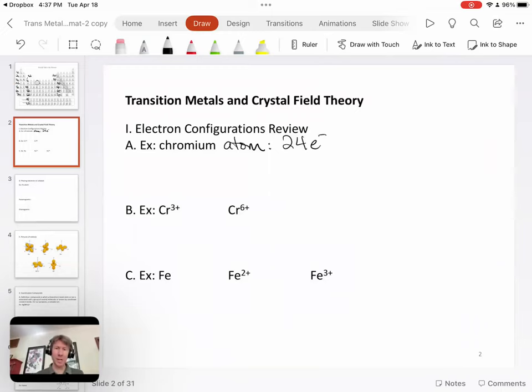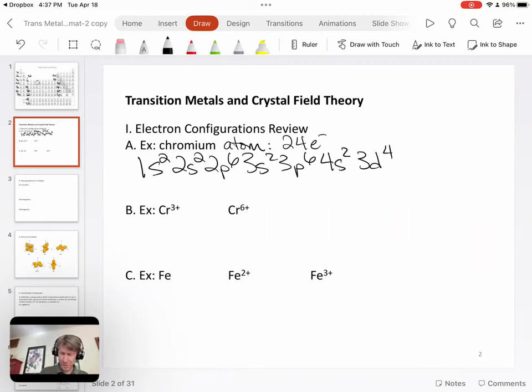Now we have 24 electrons. We'll do the electron configuration. It starts with 1S2, 2S2, 2P6, then 3S2, 3P6. That is 18 of our electrons. We need a total of 24. According to the shape of the periodic table, our answer would be 4S2, 3D4.